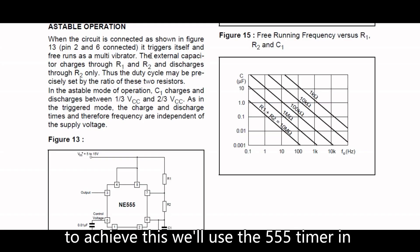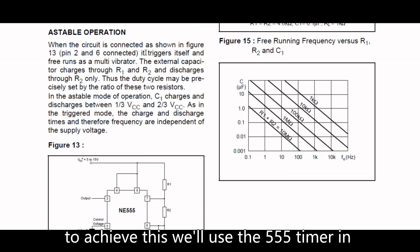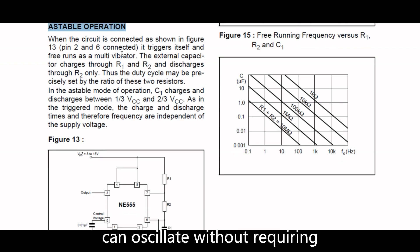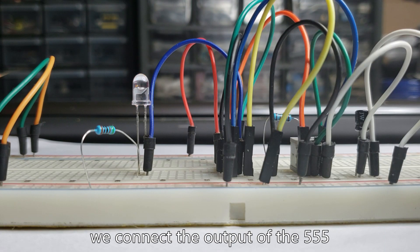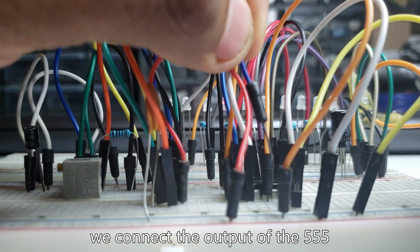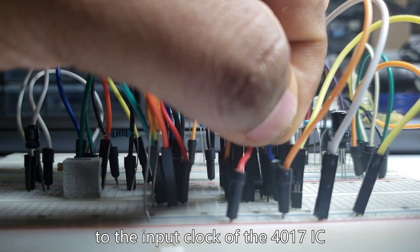To achieve this, we'll use the 555 timer in astable configuration, which means that the 555 timer can oscillate without requiring any external triggering. We connect the output of the 555 to the input clock of the 4017 IC.